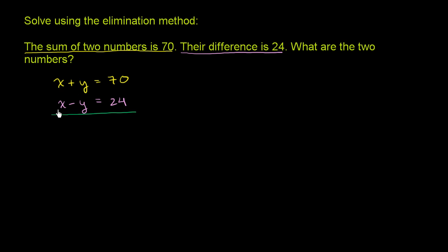So x plus y plus x minus y - well, the plus y and the minus y cancel out, and you're just left with an x plus an x, which is 2x. And then that is going to be equal to 70 plus 24. 70 plus 24 is 94.